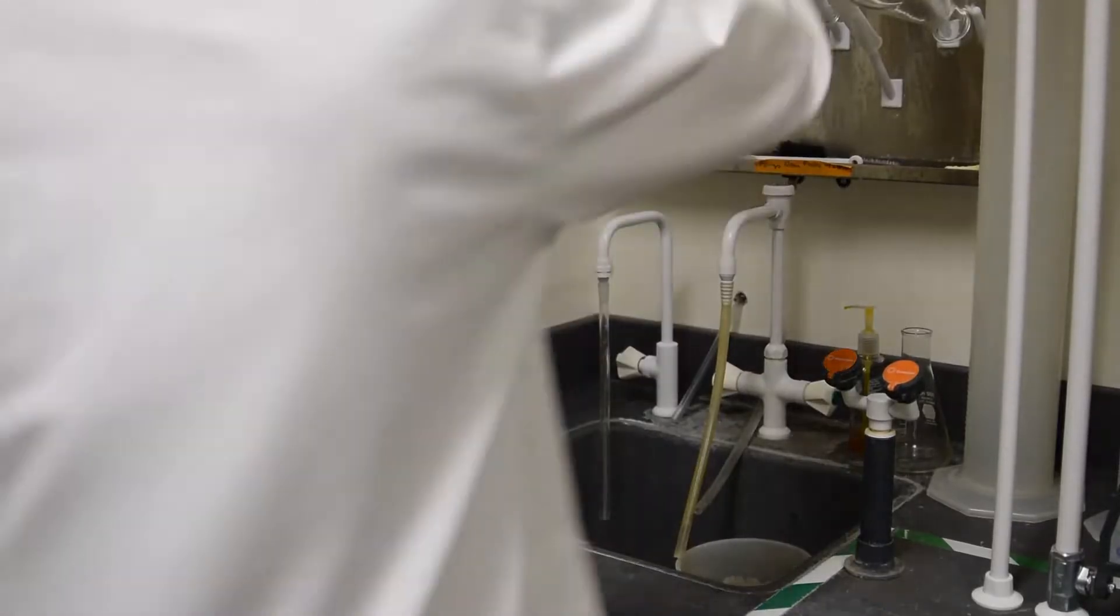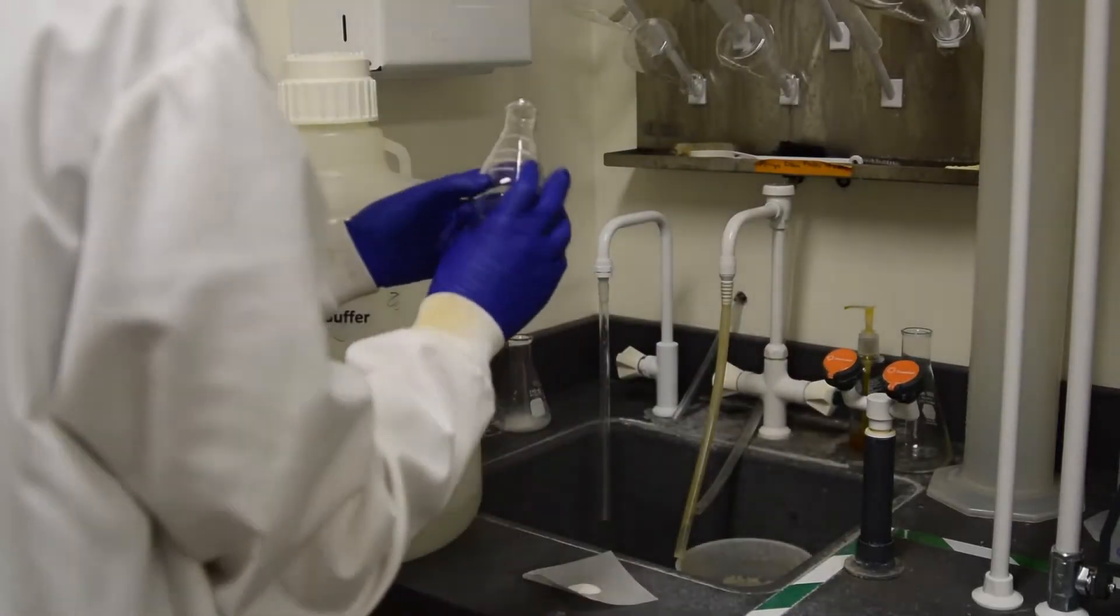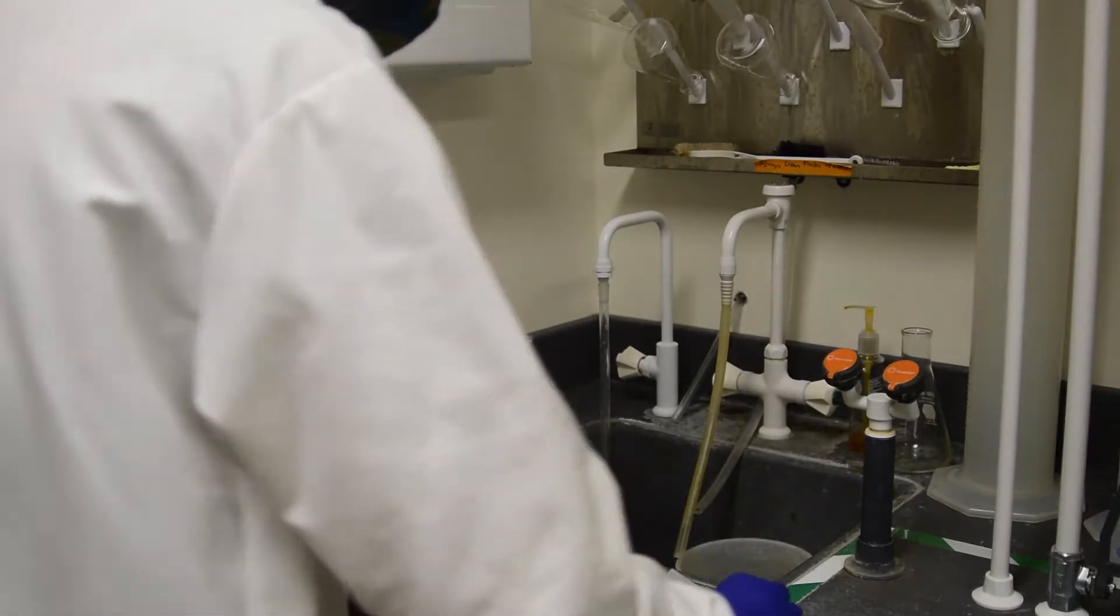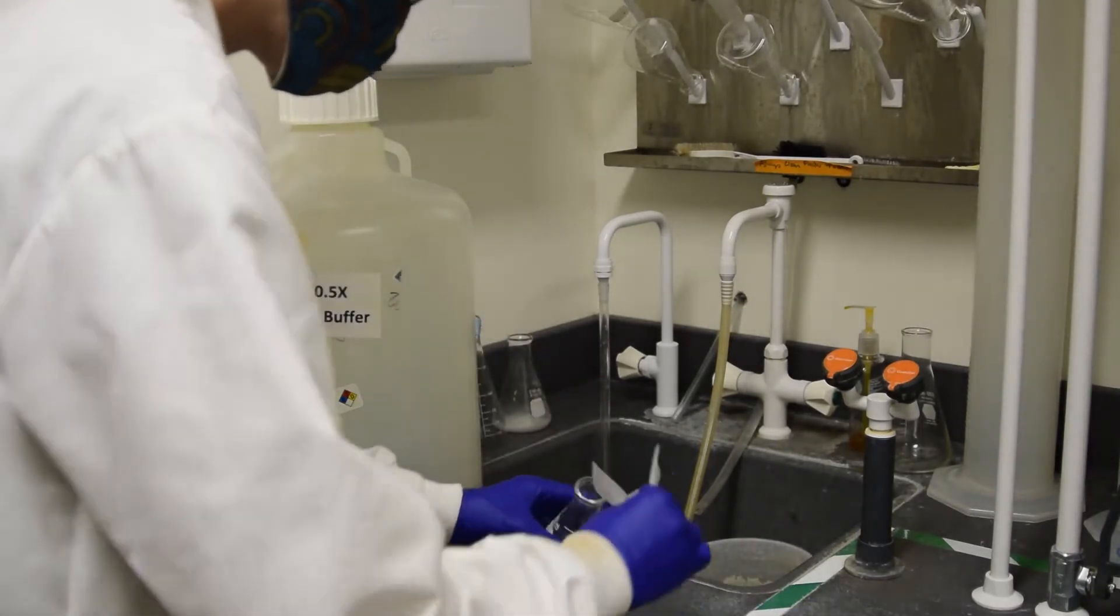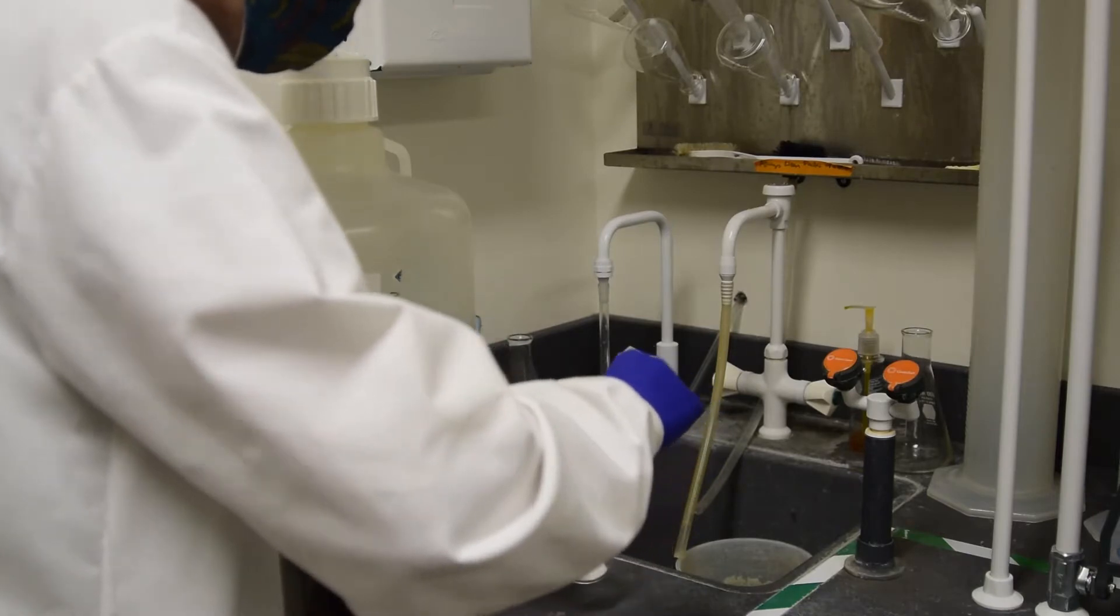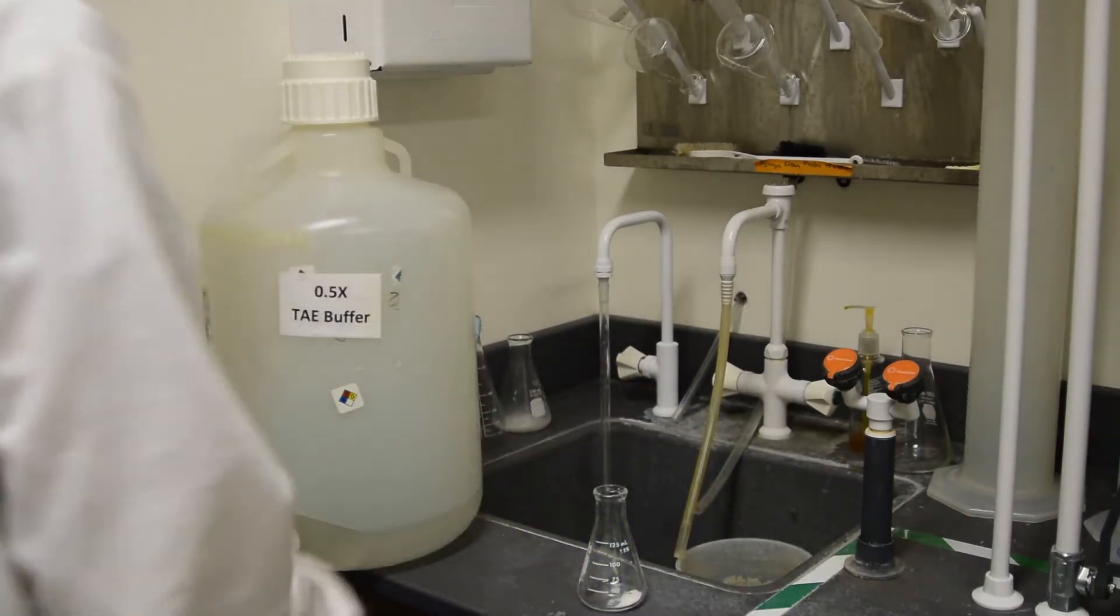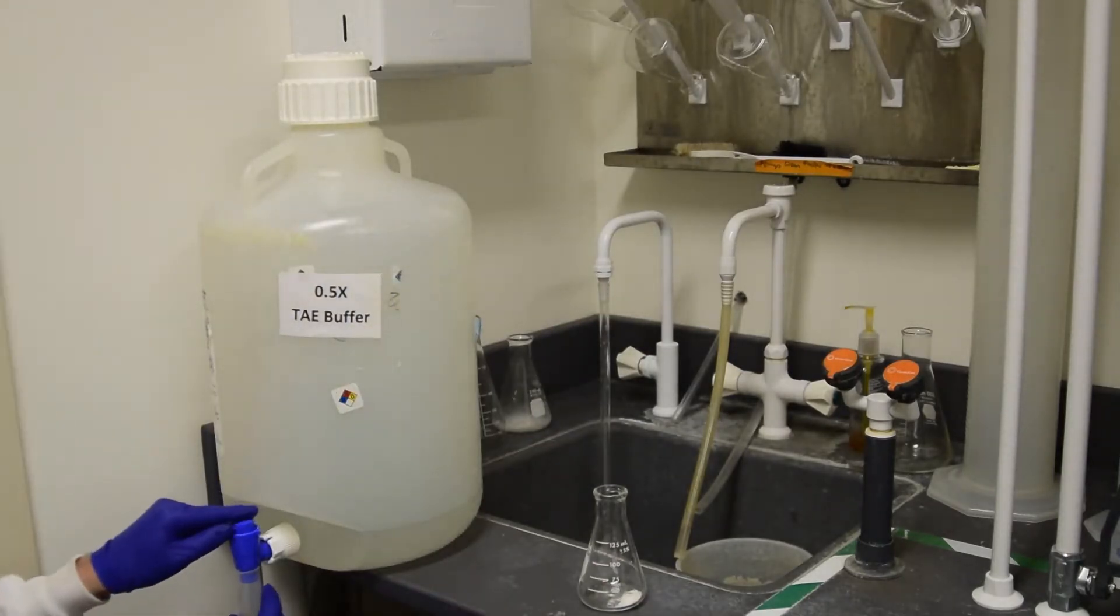Add the agarose to an appropriately sized flask, then add TAE to the necessary volume. The graduated cylinders above the sink do not have to be washed after measuring TAE.